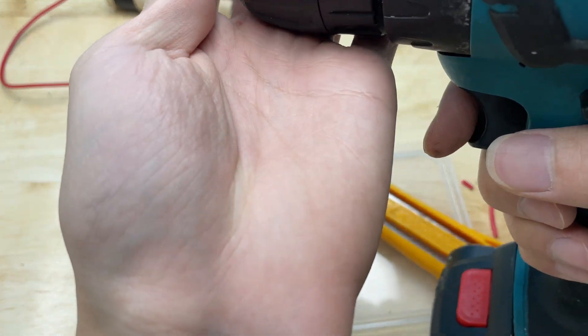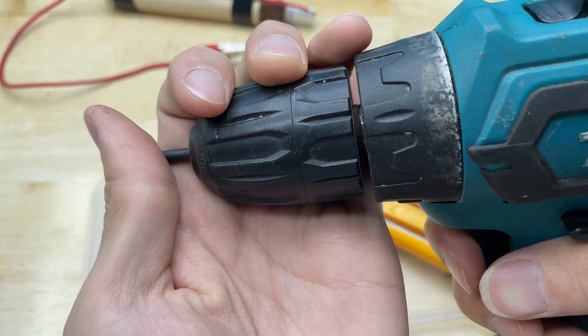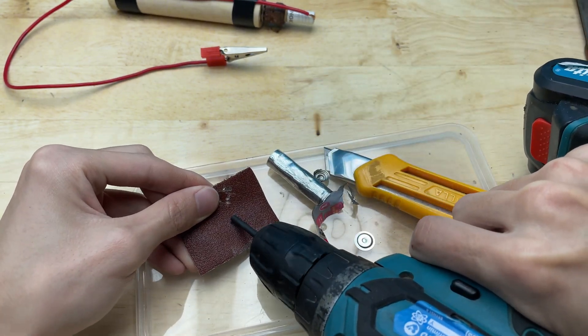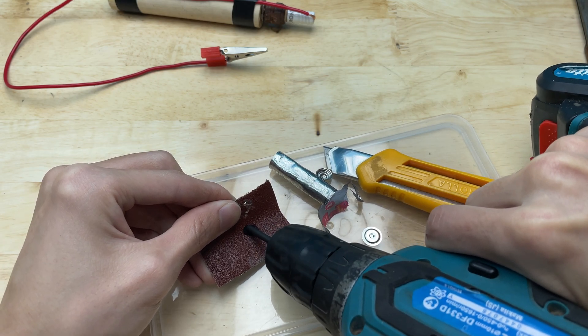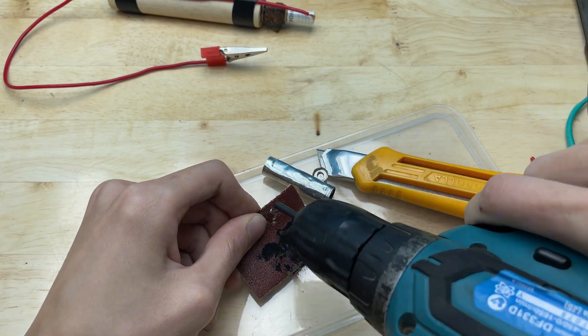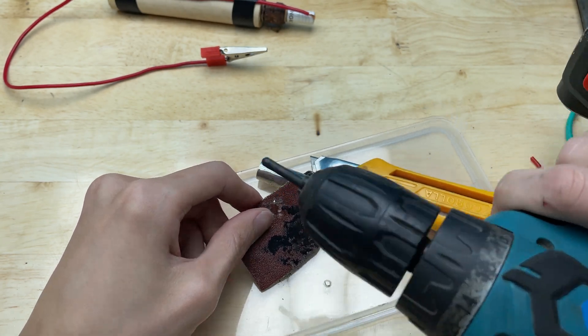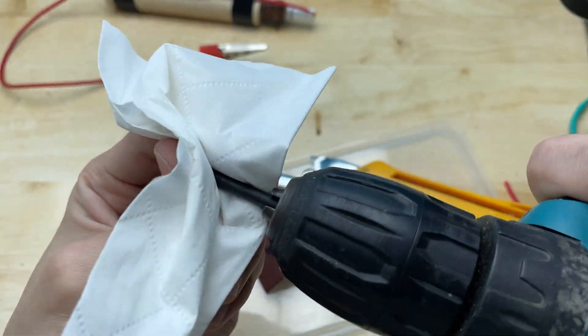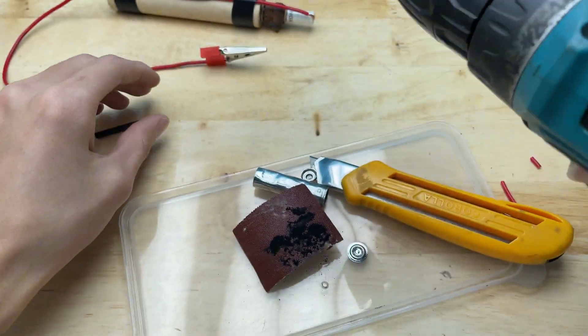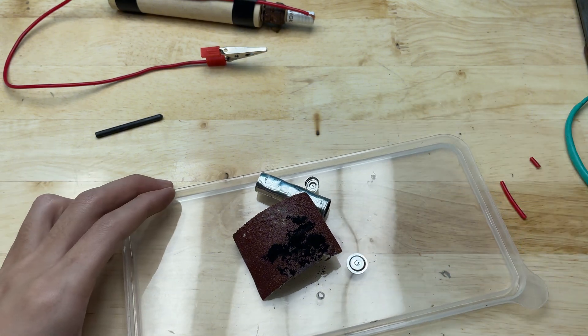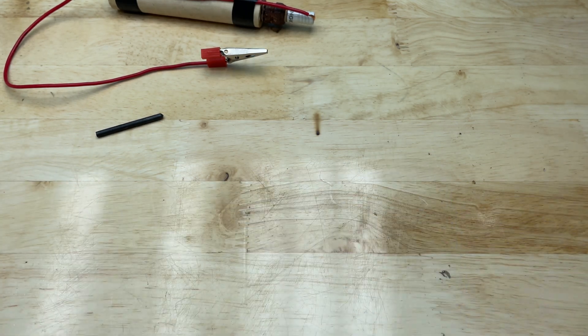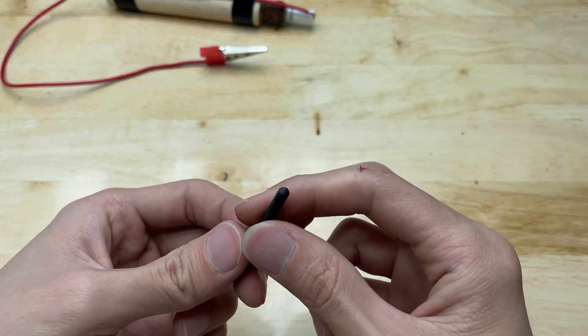Sharpen one end. Use sandpaper to grind it down to fit snugly into the spark plug. This is a graphite rod from an AA battery. This is attached to the spark plug and it will function as a welding tip.